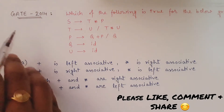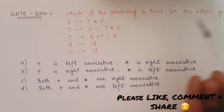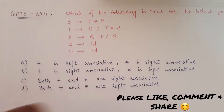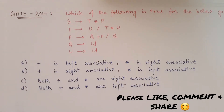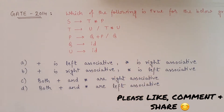So let's see today's question. This is a GATE 2014 question from the compiler design subject. The question asks: which of the following is true for the given grammar? A grammar is given to us and four options are provided. Whenever these types of questions are asked, the best approach is to read out the options first.